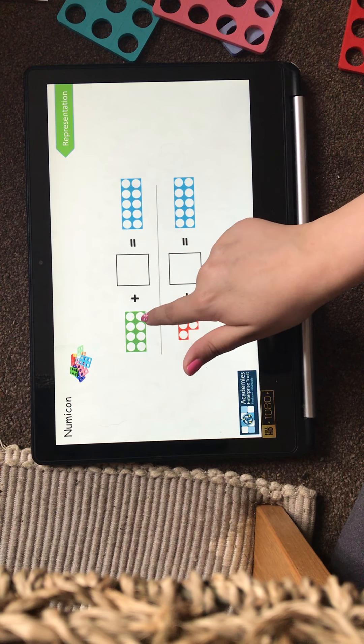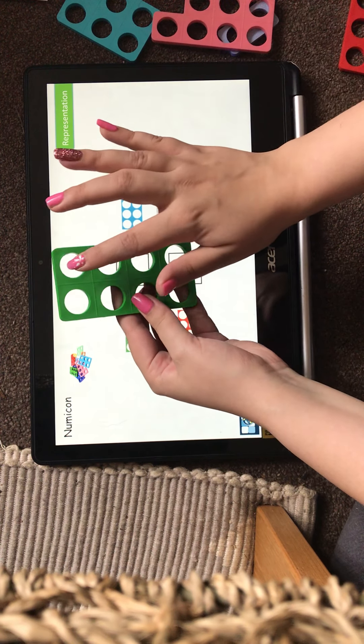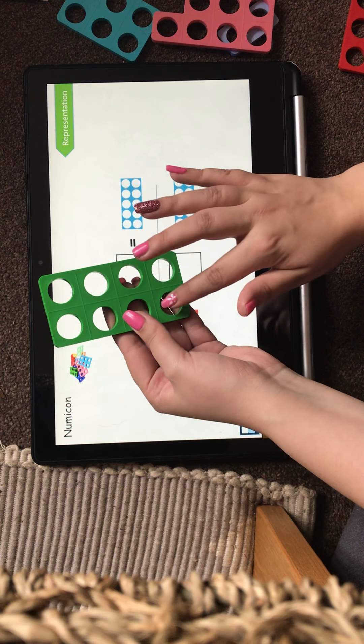1, 2, 3, 4, 5, 6, 7, 8. So I'm going to find the piece with 8 circles. 1, 2, 3, 4, 5, 6, 7, 8.